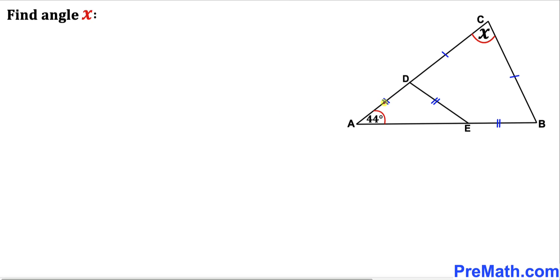Welcome to pre-math. In this video we have triangle ABC such that angle BAC is 44 degrees. Moreover, line segments AD, ED, and EB are equal in length, and furthermore line segment CD and line segment BC are equal as well. Now we are going to find the angle X.